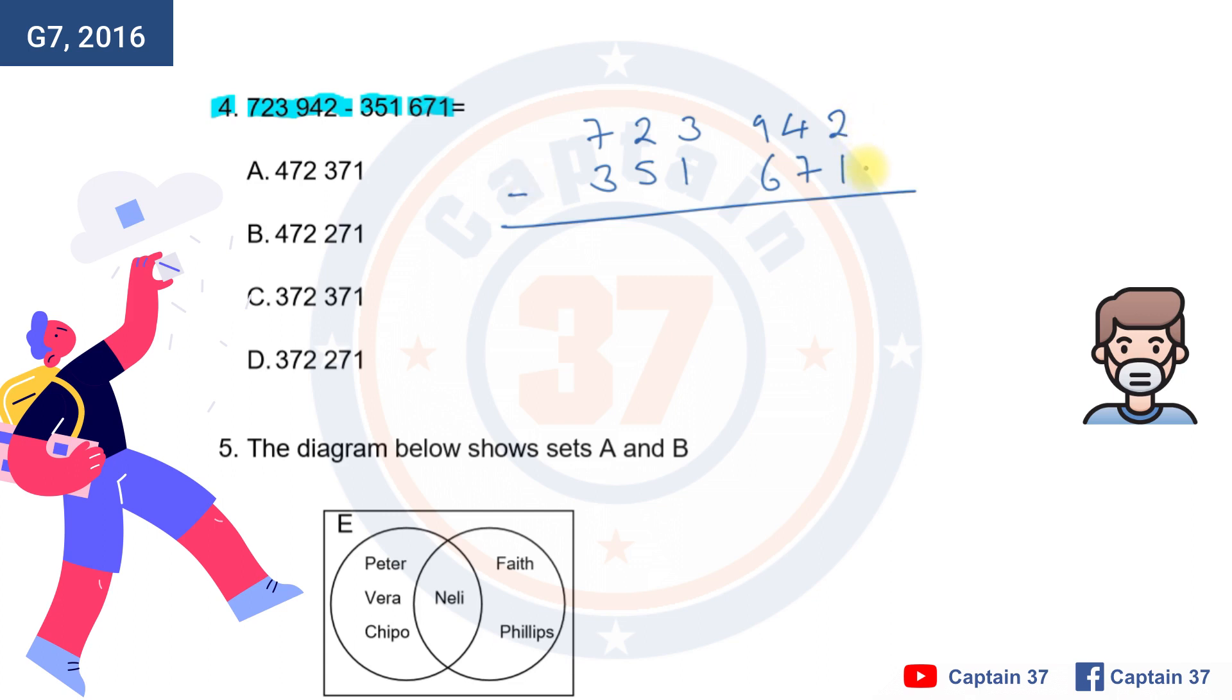2 minus 1 is 1. 4 minus 7, it can't. 4 cannot take away 7 because 4 is a smaller number. What you do is you get 1 from this 9, which is over here, and make this 14. Because you have gotten a 1 from this 9, it's going to become 8.